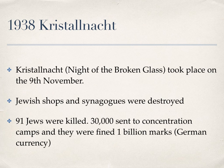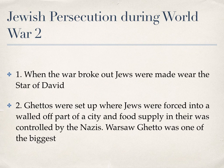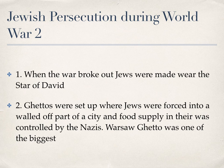In 1939, World War Two broke out after Germany invaded Poland. When they came into Poland, the Star of David was introduced — Jews were made to wear it to make them more easily recognizable. This is also when ghettos started being set up.